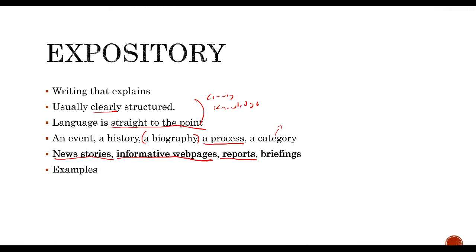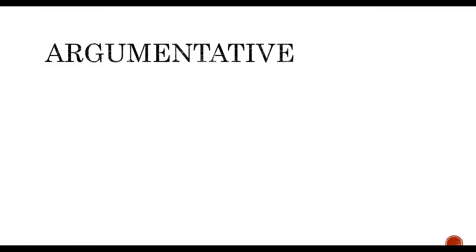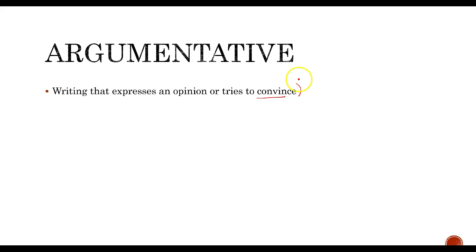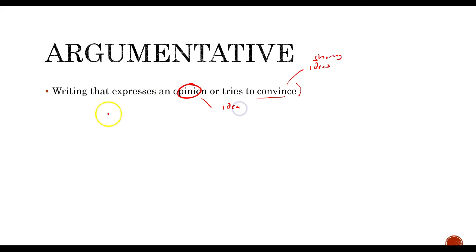In addition to expository and expressive writing, the last kind is argumentative writing — and this is probably the kind you're going to see most in college. Argumentative writing is writing that expresses an opinion or tries to convince somebody of something. Since college is really all about sharing ideas, opinions are at a premium, so you're going to read a lot of opinion-type writing or writing that conveys an idea.